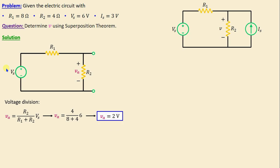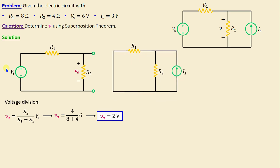Now let's consider the independent current source active and the independent voltage source inactive, which will be replaced by a short circuit. In order to find the voltage VB across the resistor R2, we need first to calculate the current I through the resistor R2.